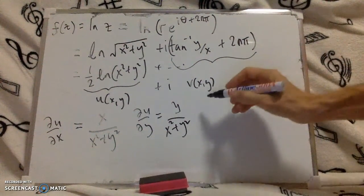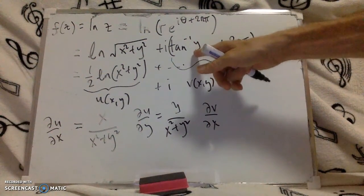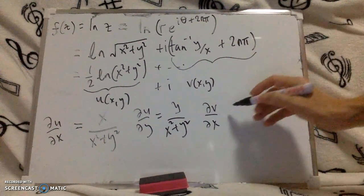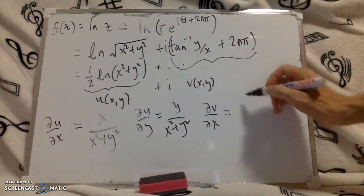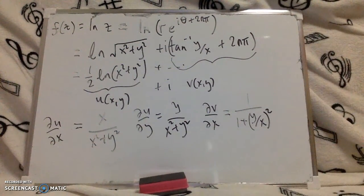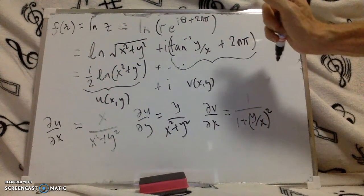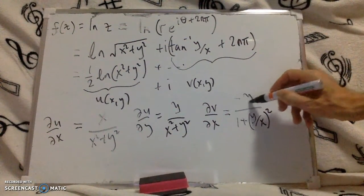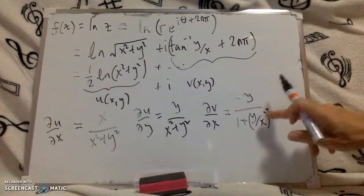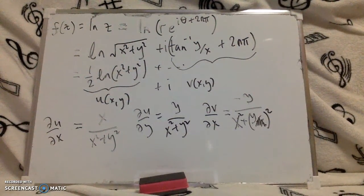And we also need dv by dx. dv by dx is a bit of a pain, you have to differentiate this expression here. If you differentiate tan you get 1 over 1 plus, well the differential of tan x is 1 over 1 plus x squared, so here we have a function of a function. So the 1 over 1 plus x squared first, so it's 1 over 1 plus y over x squared, then we have to differentiate the y over x, so that gives us minus y over x squared. So we multiply the bottom by x squared, this becomes x squared here and we get rid of this one here, so we end up with minus y over x squared plus y squared on the bottom.